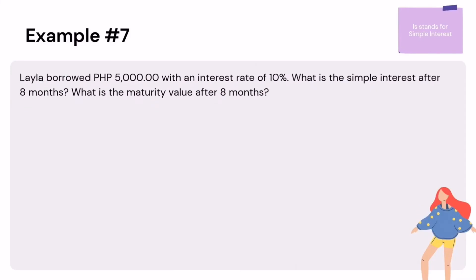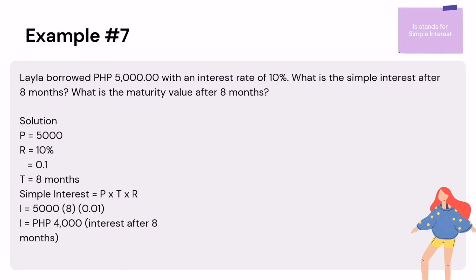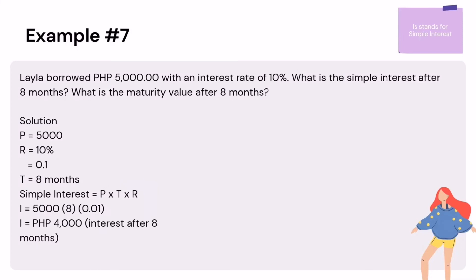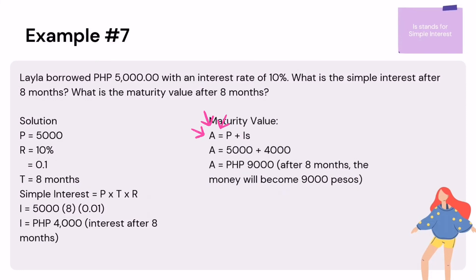Example 7: Leila borrowed $5,000 with an interest rate of 10%. What is the simple interest after 8 months? What is the maturity value after 8 months? Given: P = 5,000, R = 10% or 0.1, T = 8 months. SI = P × T × R = 5,000 × 8 × 0.01 = ₱4,000. Then, maturity value: Amount = Principal + Simple Interest = 5,000 + 4,000 = ₱9,000. After 8 months, the money will become ₱9,000.